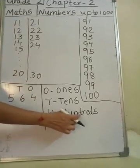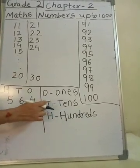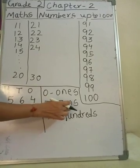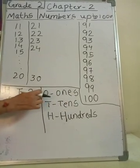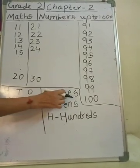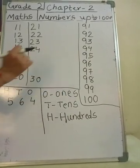So to summarize: H is for 100's, T is for 10's, and O is for 1's.